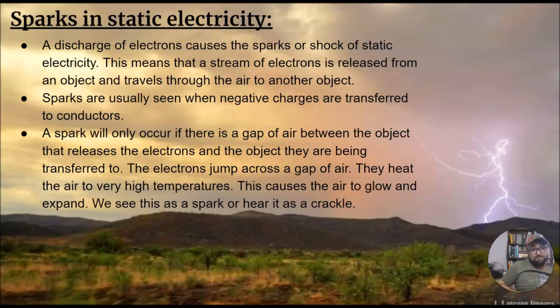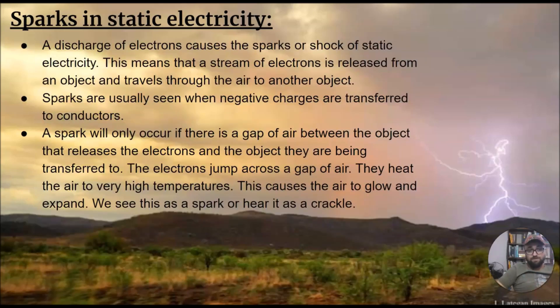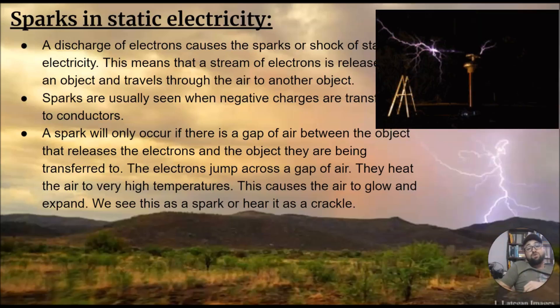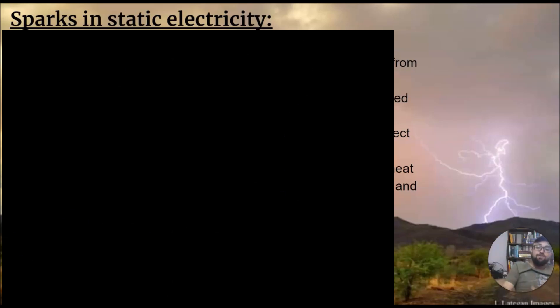Sparks in static electricity can be explained in the following way. A discharge of electrons causes the spark or shock of static electricity. This means that a stream of electrons is released from an object and travels through the air to another object. Sparks are usually seen when a negative charge is transferred to conductors - something that can conduct electricity. A spark will only occur if there is a gap of air between the objects that releases the electrons and the object they are being transferred to. The electrons jump across that gap of air. They heat the air to very high temperatures. This causes the air to glow and expand. We see this as a spark or heat as it crackles. You guys see thunder, lightning - very good example of that.